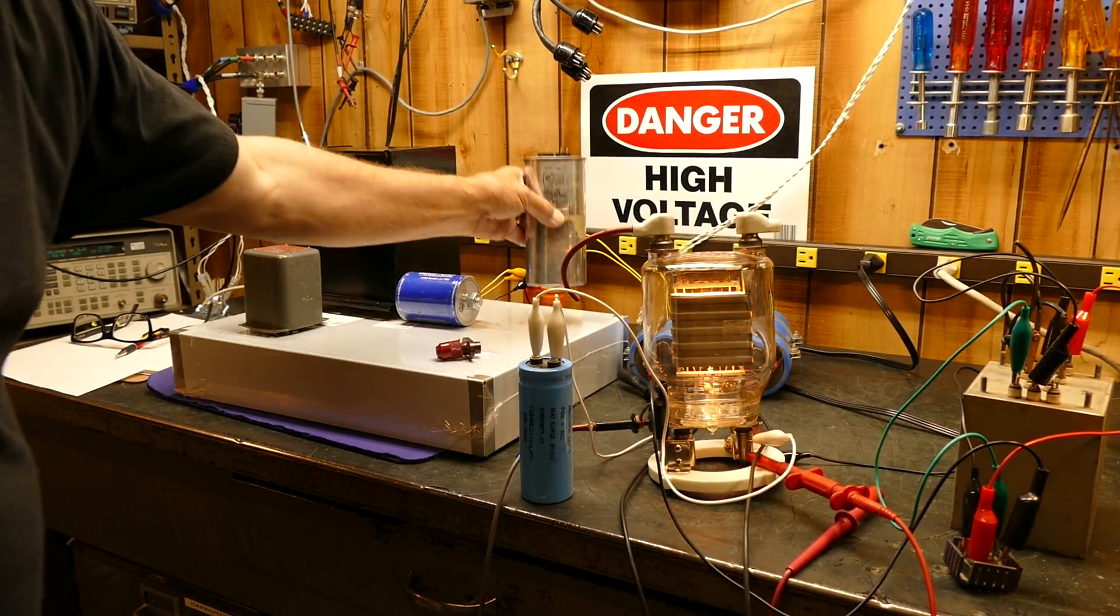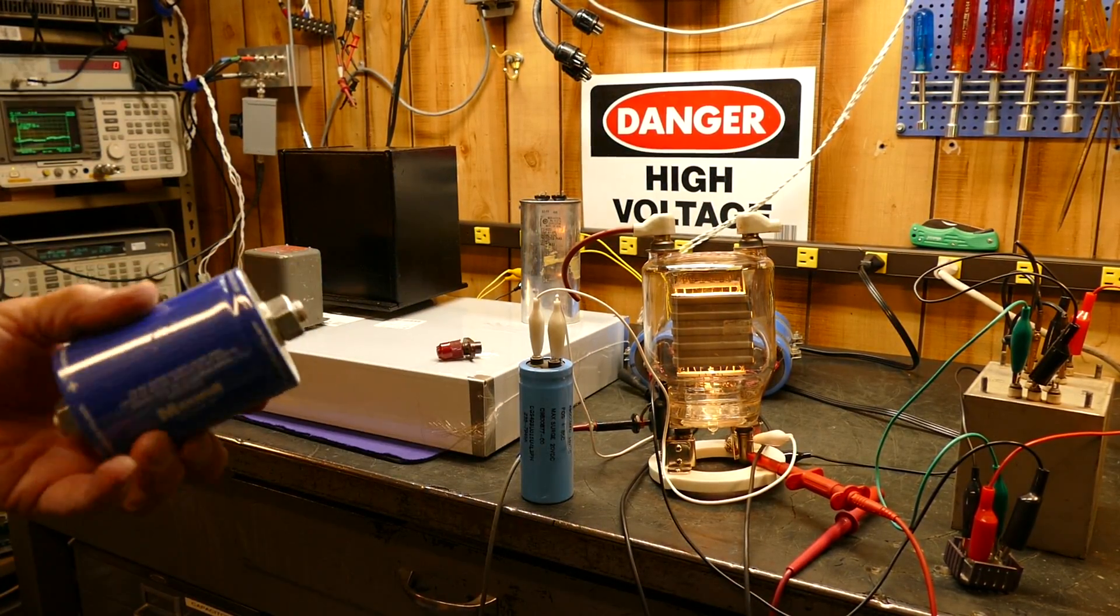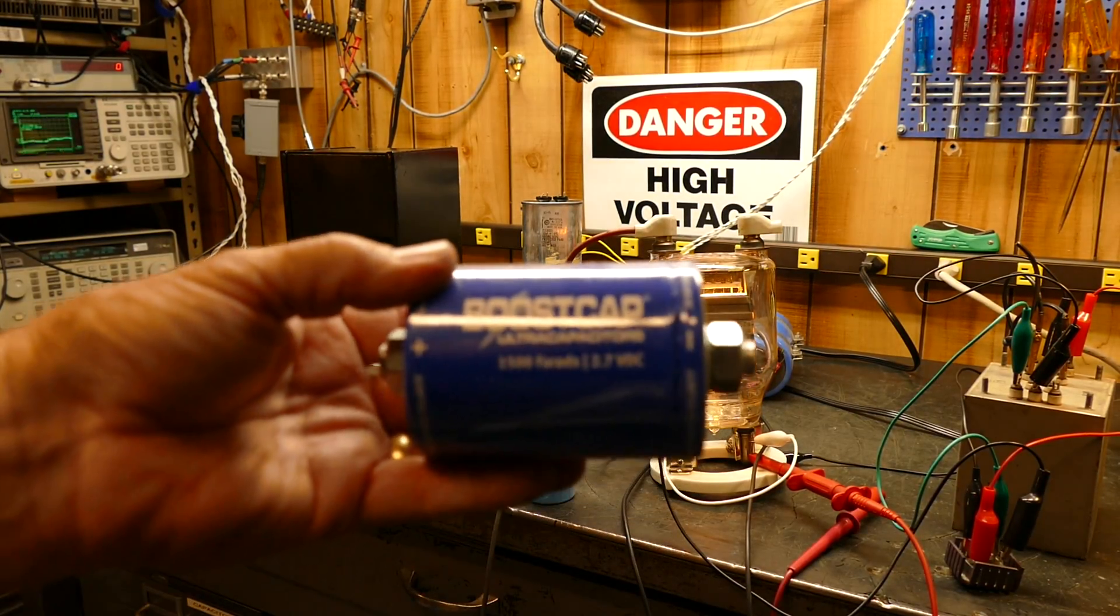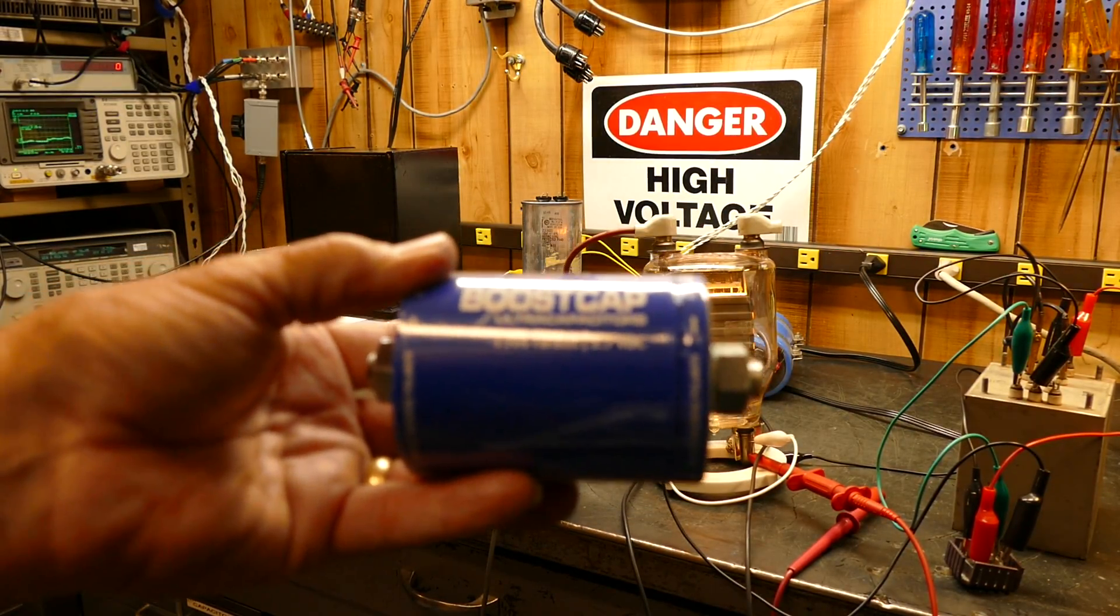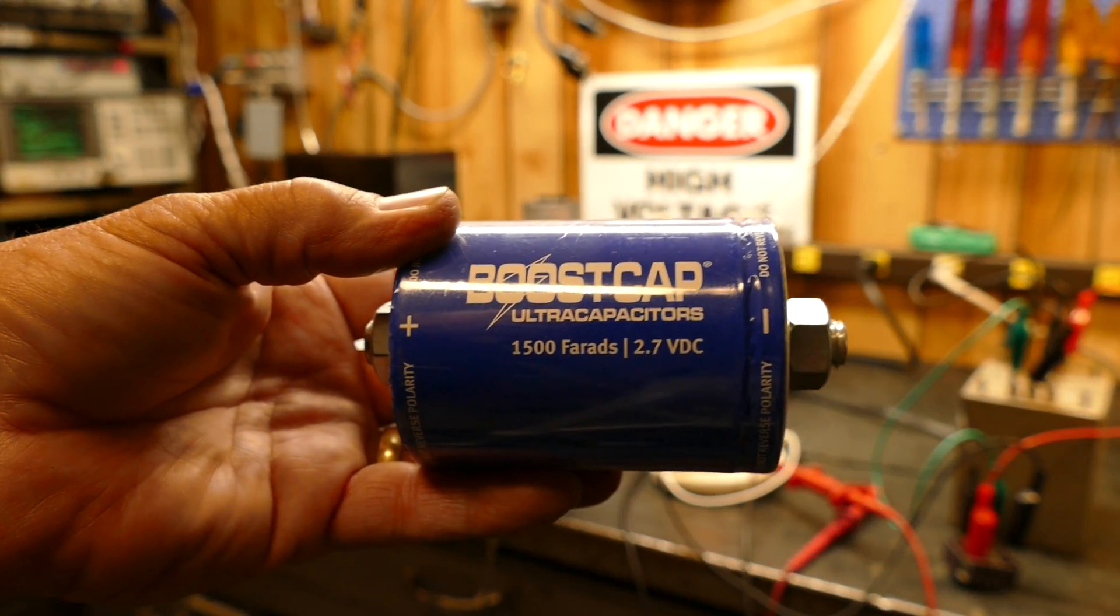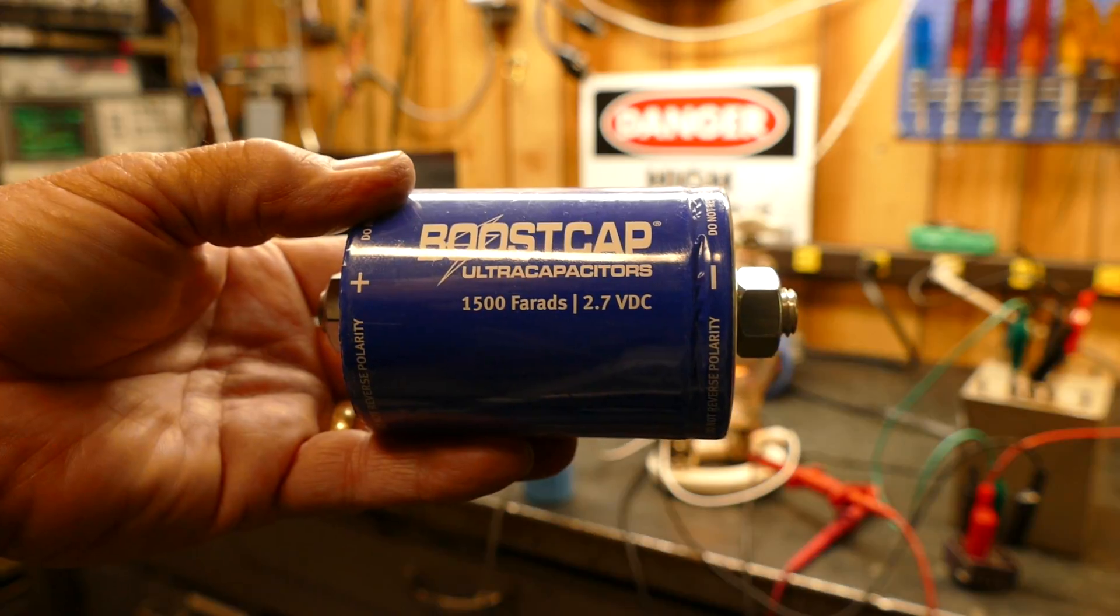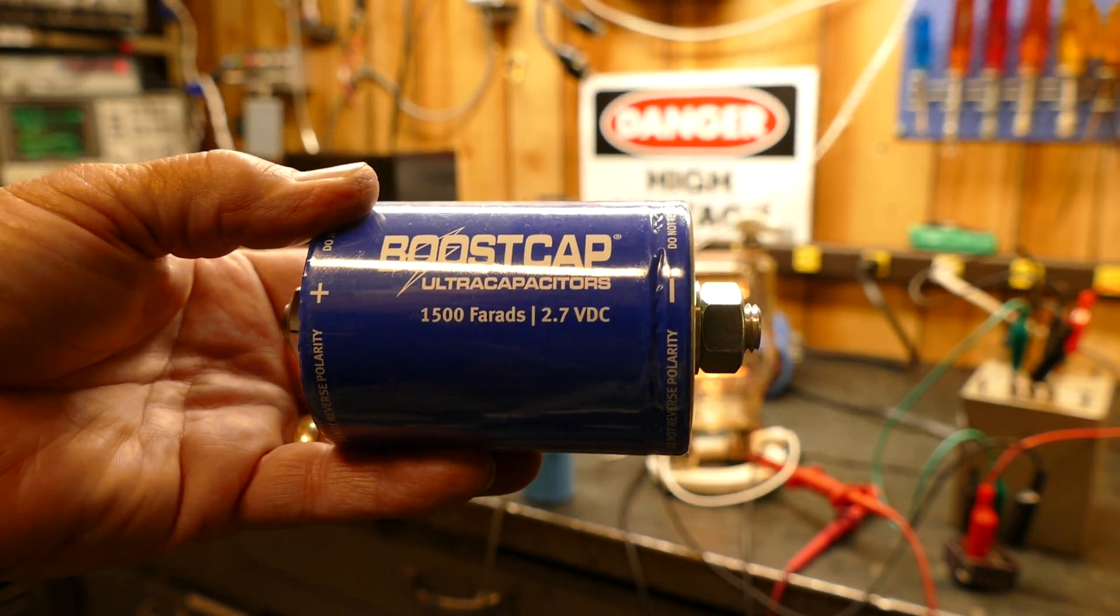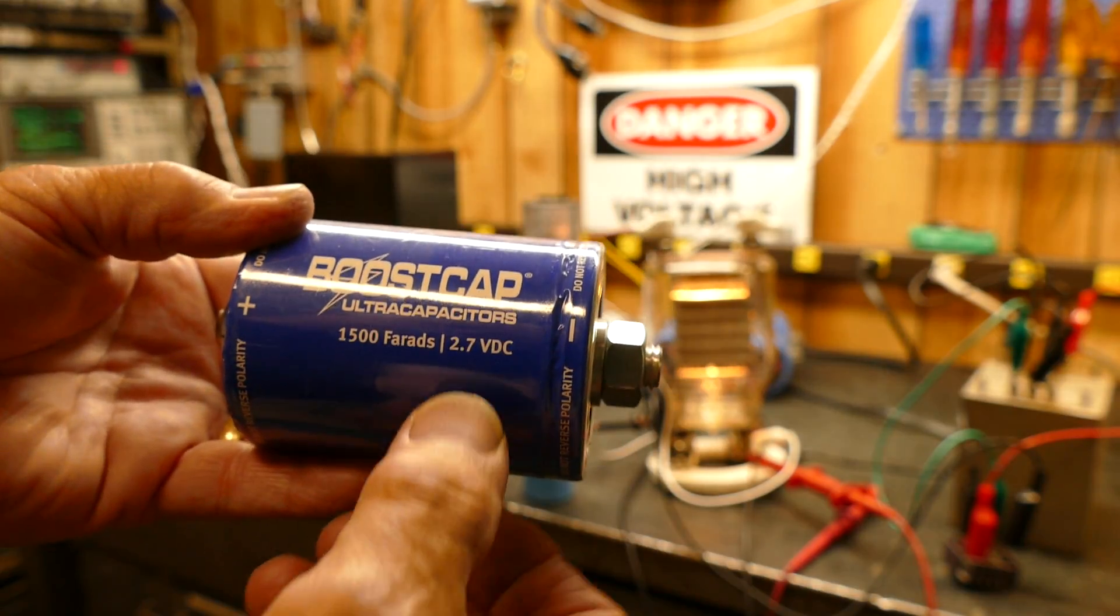And here's something I don't know how many of you have seen. If you've heard of them, these are called ultracapacitors. Look at the rating on this thing. You've got to stare at it for a second to believe it: 1500 farads - not 1500 microfarads, but 1500 farads at 2.7 volts DC.